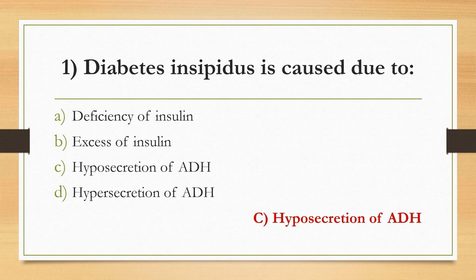Regarding other options: Deficiency of Insulin leads to Diabetes mellitus. Excess of Insulin causes Hyperinsulinemia. Hypersecretion of ADH leads to SIADH — Syndrome of Inappropriate Antidiuretic Hormone Secretion — which causes the body to retain too much water.